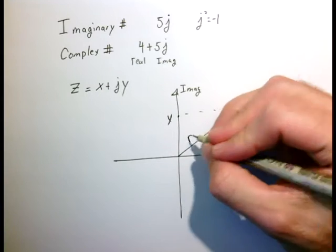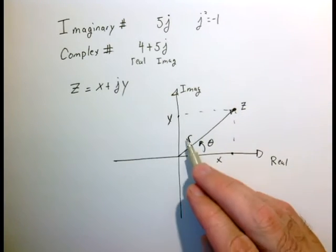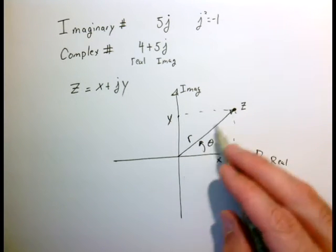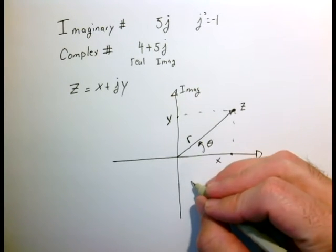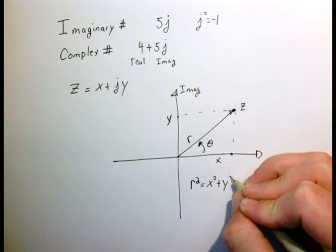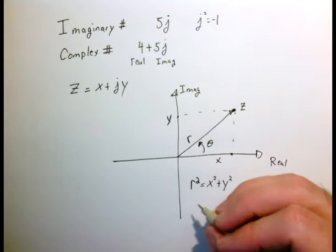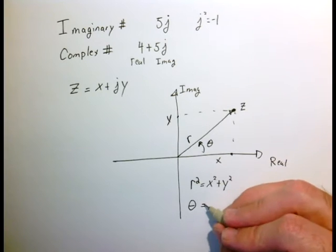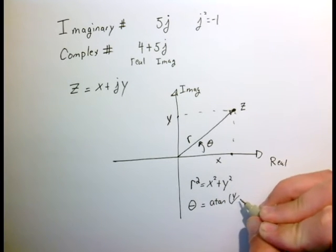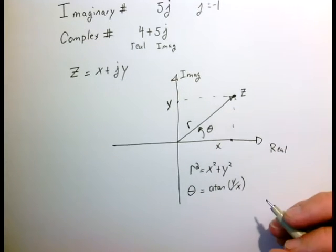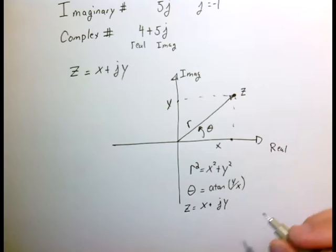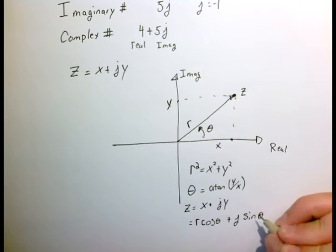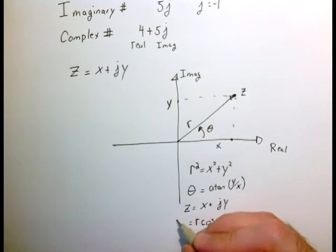We can also define this complex number as r — the distance to the origin, like a radius — and theta, the angle that this vector makes with the real axis. Geometry relates these: Pythagoras's theorem tells us r squared equals x squared plus y squared. And theta is the arctangent of y over x. Another important relationship is that z equals x plus jy, where x equals r cosine of theta and y equals r sine of theta, giving us z equals r cosine theta plus j times r sine theta.